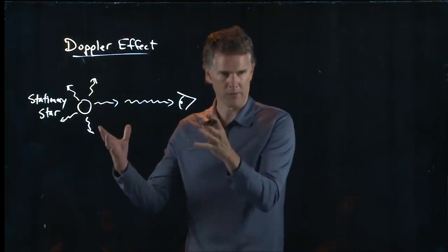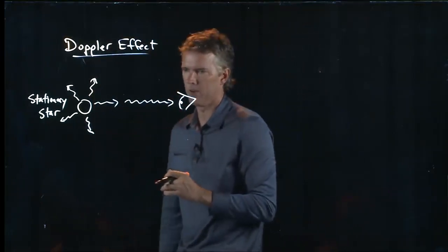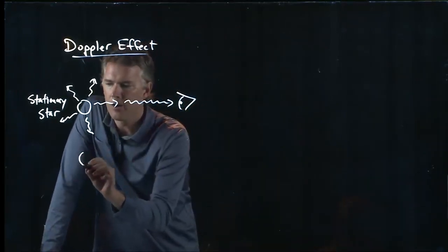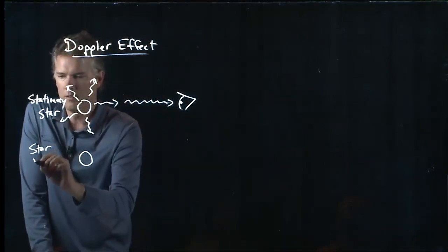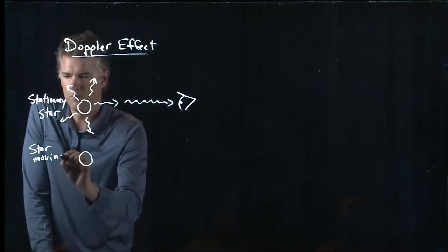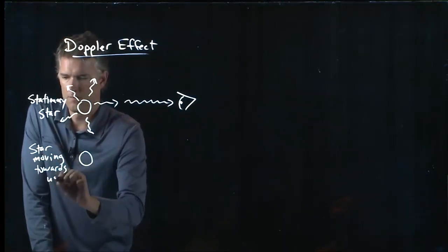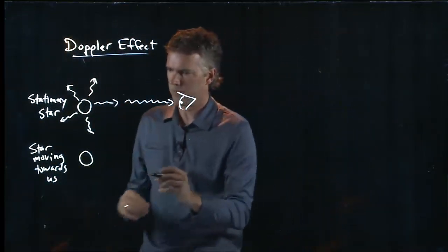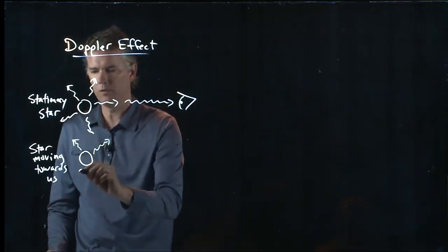I observe some particular color that came out of this star. This is usually a whole spectrum of colors, of course, but I observe some particular colors that are coming out of this star. But let's say the following happens. Let's say the star starts moving towards us. The universe is a big, crazy, violent place. Stars are moving all over the place. Let's say we find one that is moving towards us.